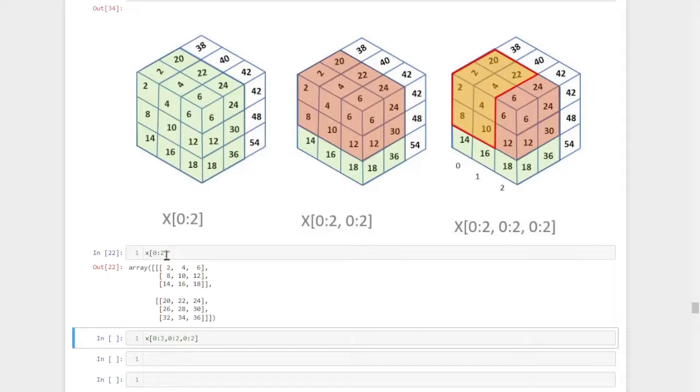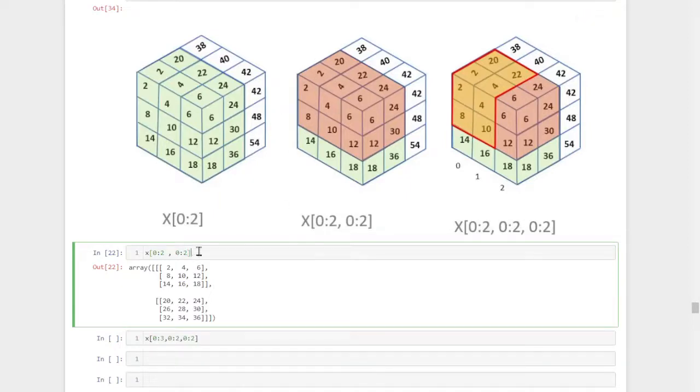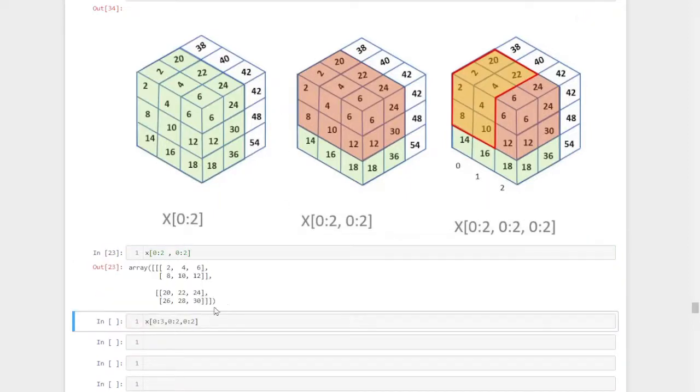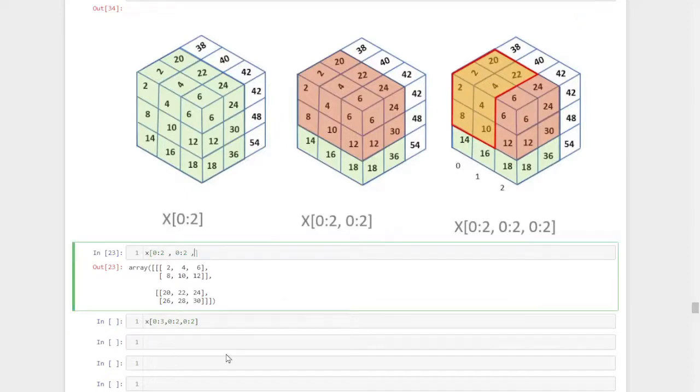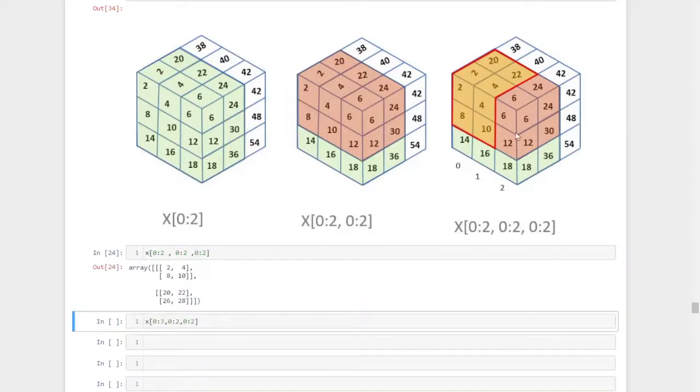Then comma, again 0 up to 2, these 2 layers we take out. So now we got trimmed out this much area: 2, 4, 6, 8, 10, 12 in the first layer and the second layer 20, 22, 24, 26 up to 30. Now we are trimming out in this direction, the column. So again, comma 0 to 2. So we got exactly the elements we need, we can trim it out.